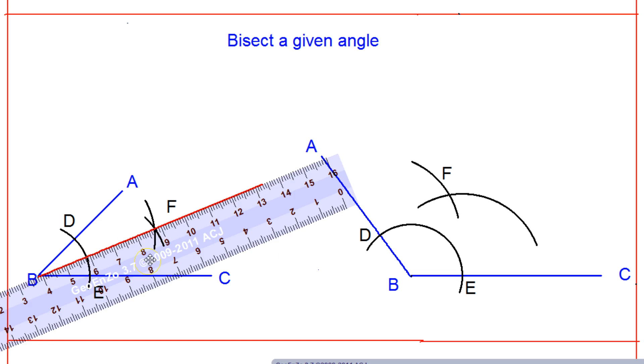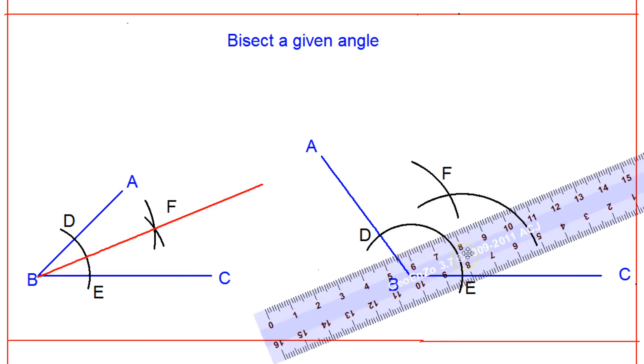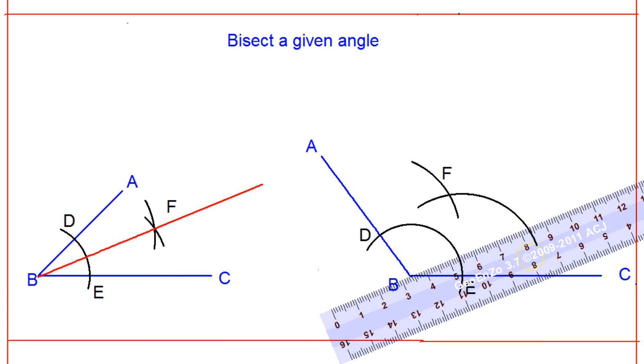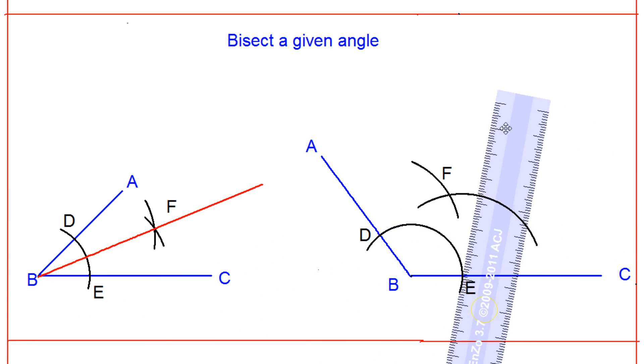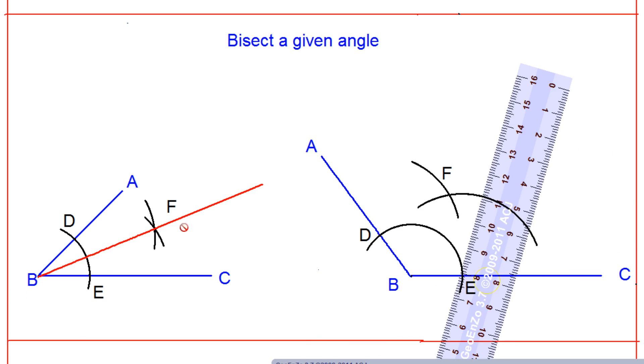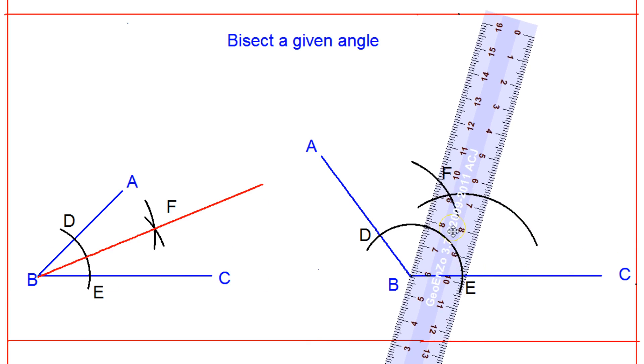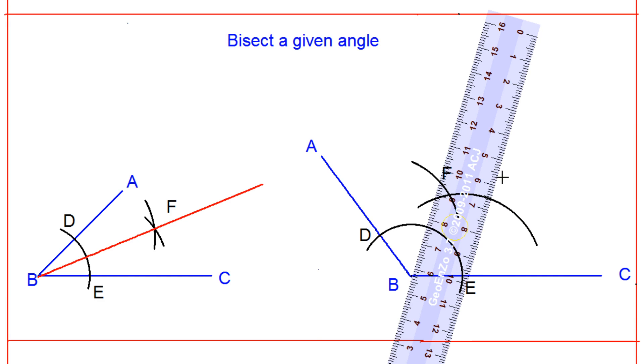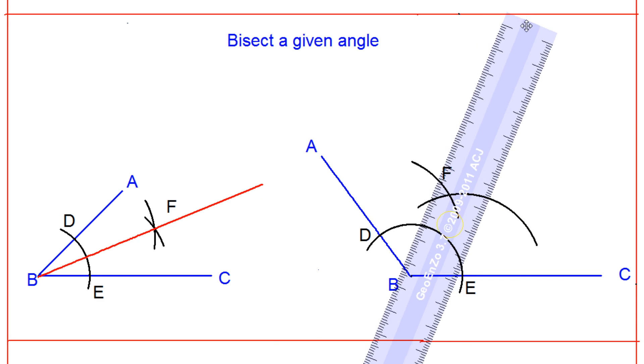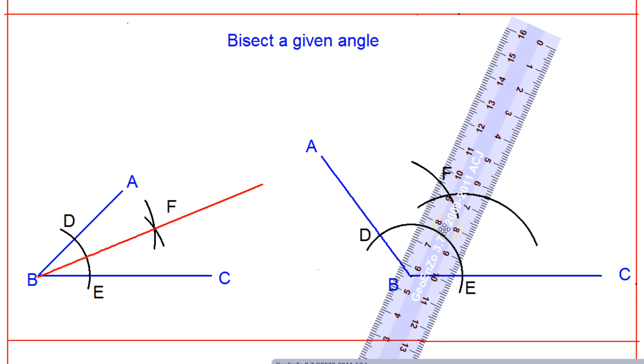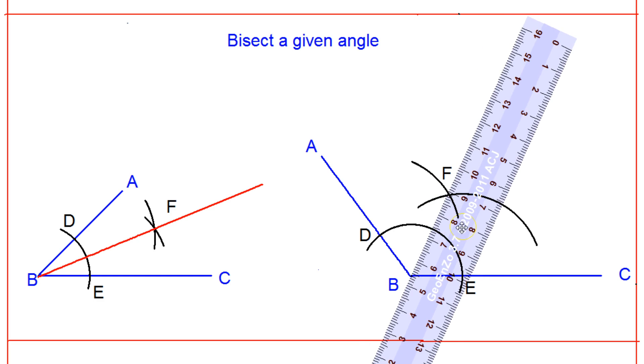Now connect. So this BF is nothing but the center which is cutting the angle into two equal parts. So now if you measure this ABF or CBF, that will be equal. That means it is dividing this angle ABC into two equal parts with the help of this line BF, which is divided. I have done it for the first figure.